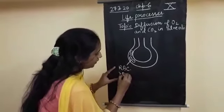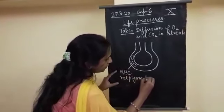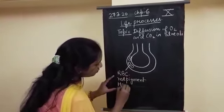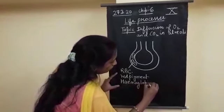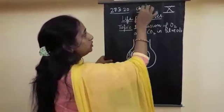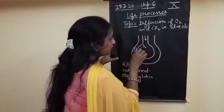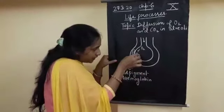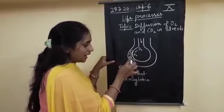Your RBC is having red pigment which is known as respiratory pigment known as hemoglobin. So this hemoglobin molecule carries the oxygen. Through the trachea, through the bronchioles and bronchus it ends into the alveolar sac and here the entry of oxygen gas is taking place.